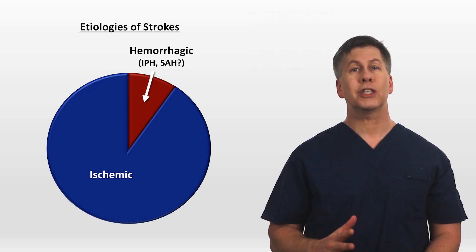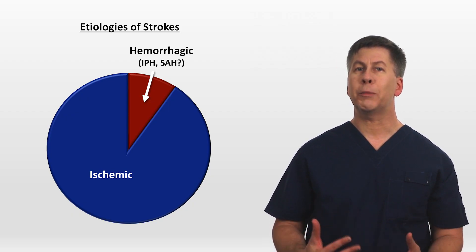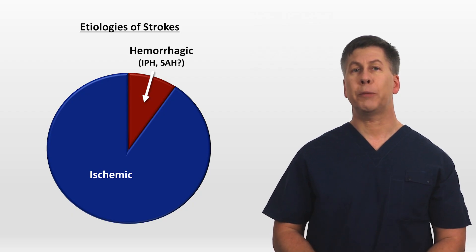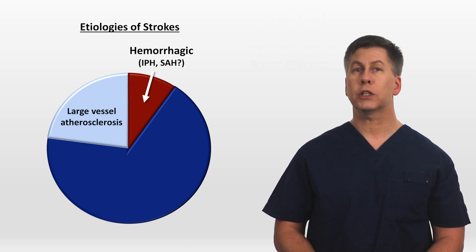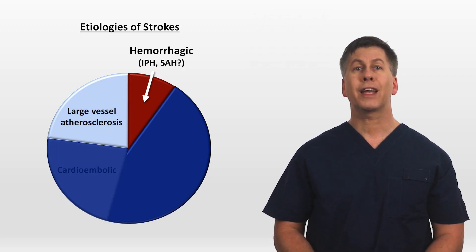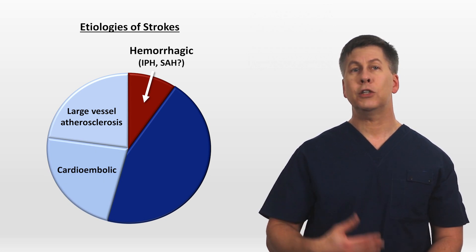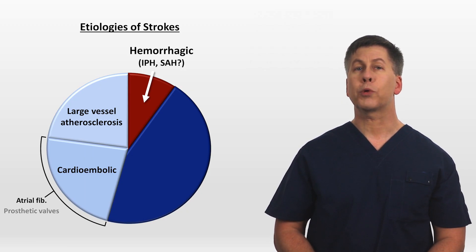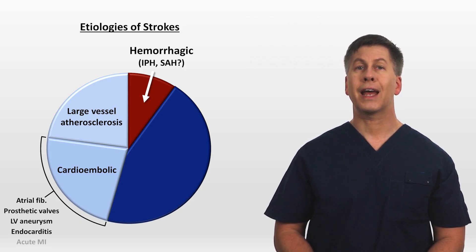Either way, aside from their seriousness and their acuity of onset, hemorrhagic strokes share relatively little with ischemic strokes and won't be discussed more in this specific video. But let's take a closer look at the subtypes of ischemic strokes, of which there are five. Ischemic strokes can be due to large vessel atherosclerosis, most commonly a carotid artery. They can be cardioembolic, in which a thrombus originates in the heart before embolizing into the systemic circulation. This is most commonly due to atrial fibrillation, but other causes include prosthetic heart valves, left ventricular aneurysms, endocarditis, and an acute MI.